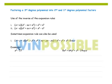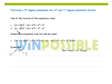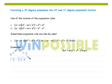In my first example, I have the difference of two perfect cubes. When I take the cube root of x cubed, I get x. And when I take the cube root of 27, I get 3. Now I plug my values into the equation: in my first set of parentheses I subtract my two cube root values, then multiply that times the quantity of the square of the first, plus my first times my last, plus the square of my last.